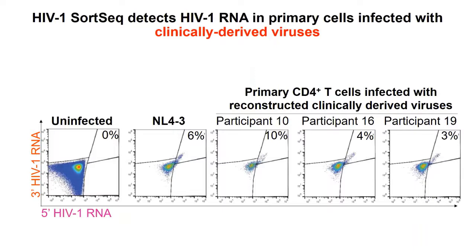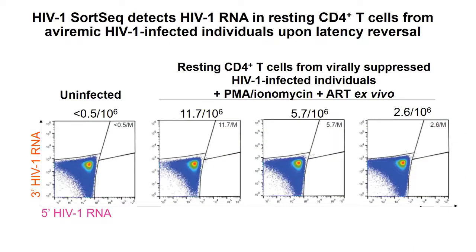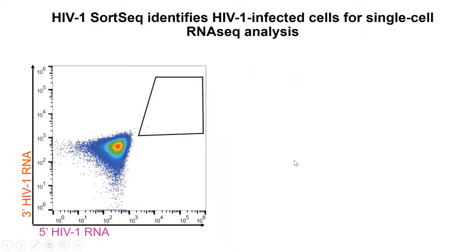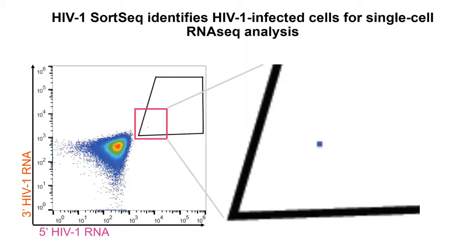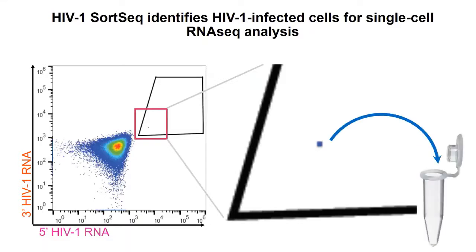We use very stringent gating on HIV-infected cells to make sure our gating is correct. When it comes to patient samples it becomes very tricky because there's only 1 to 10 per million CD4 T cells containing inducible HIV, so there are very, very few cells. But we're able to sort these HIV-infected cells. The sorter will see them even if we can't, so we just sort them out for single-cell RNA-seq.